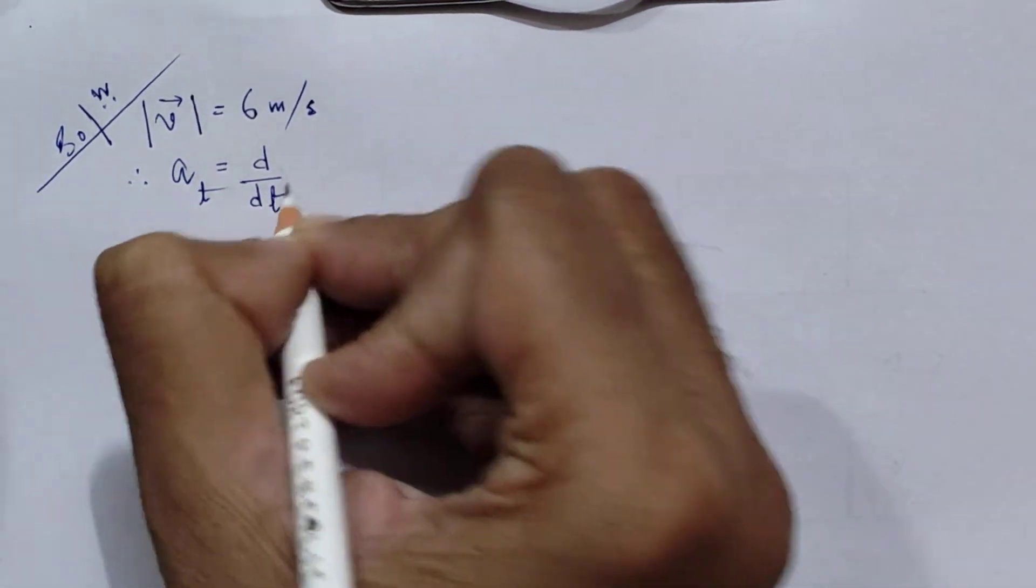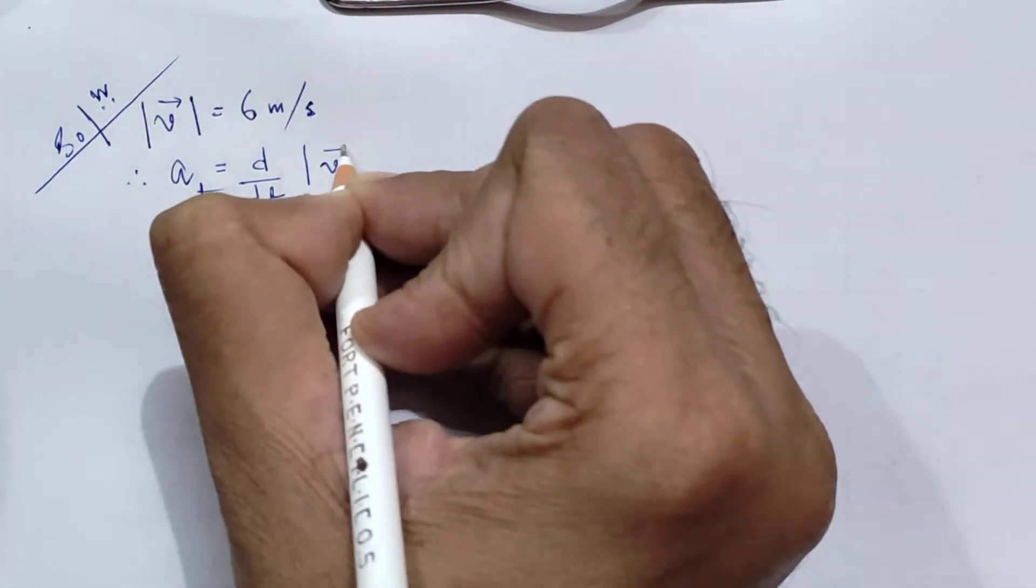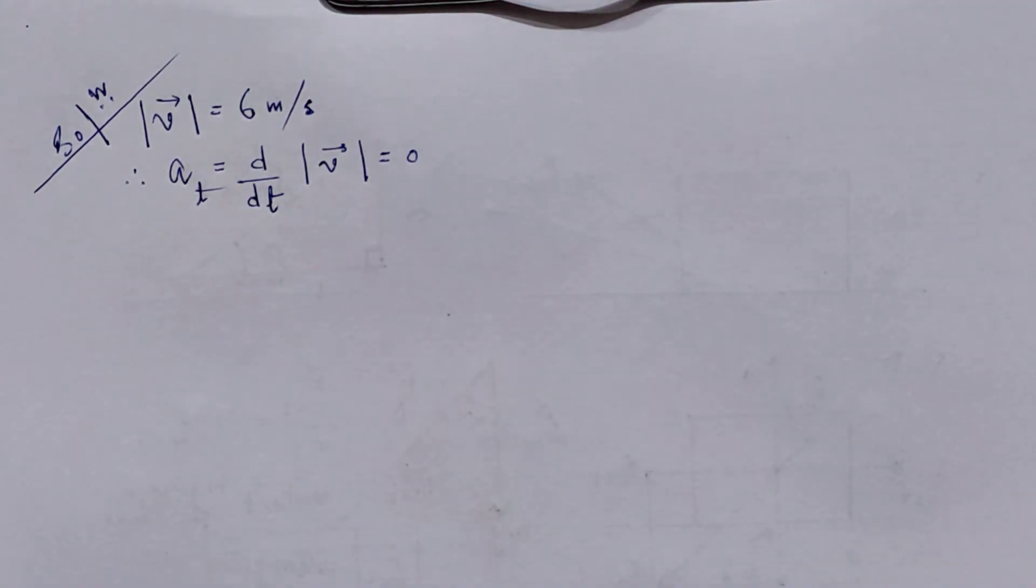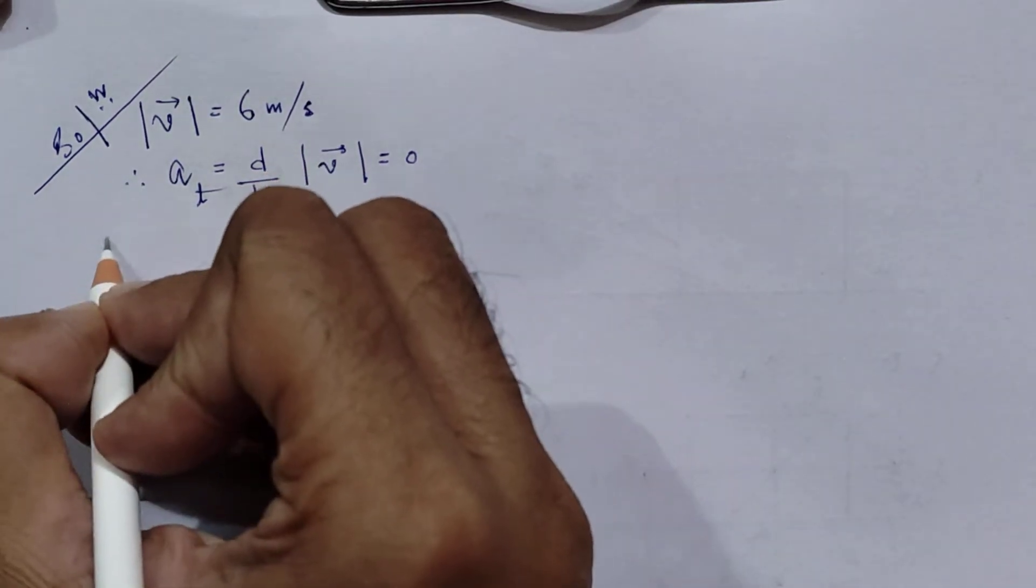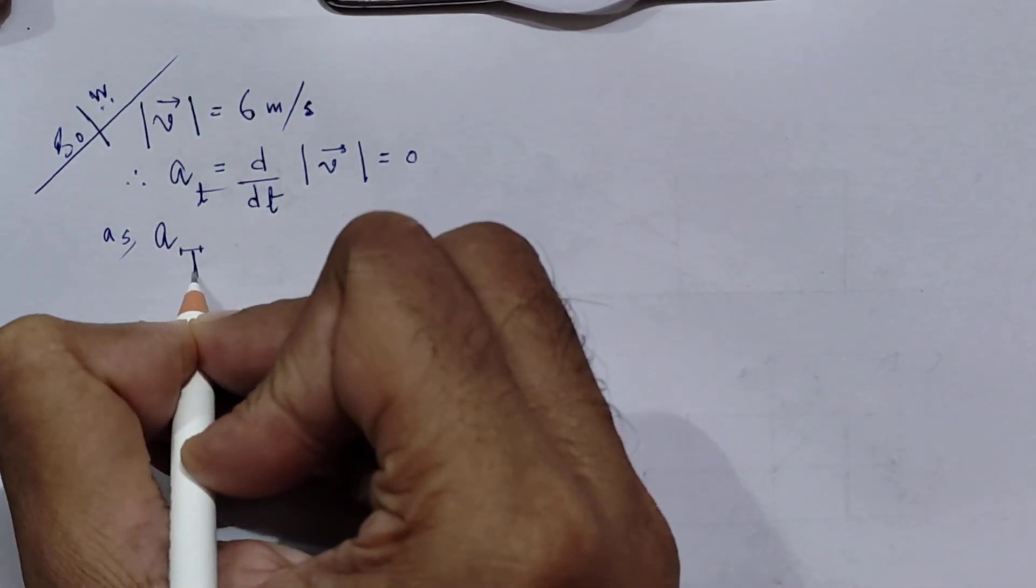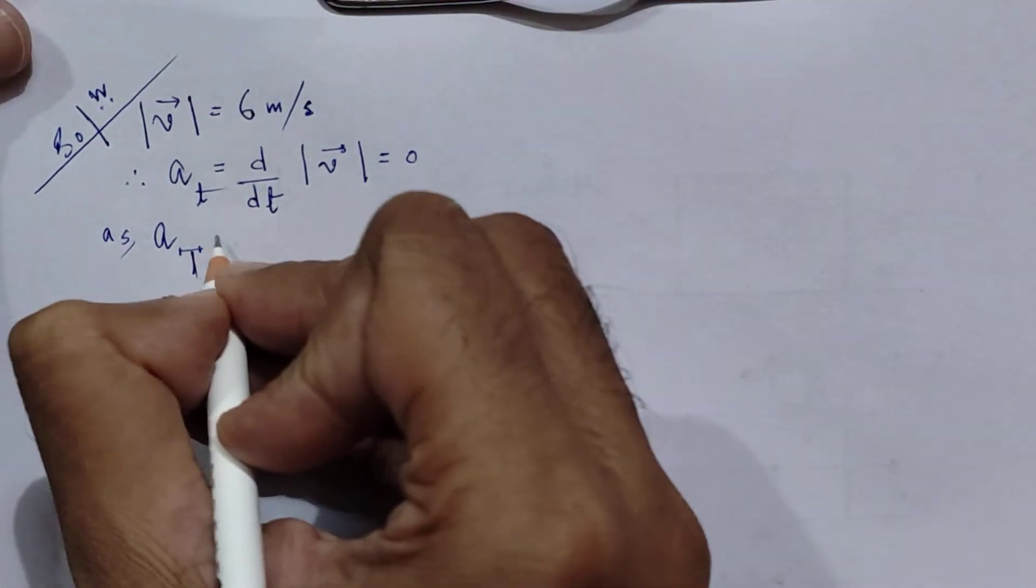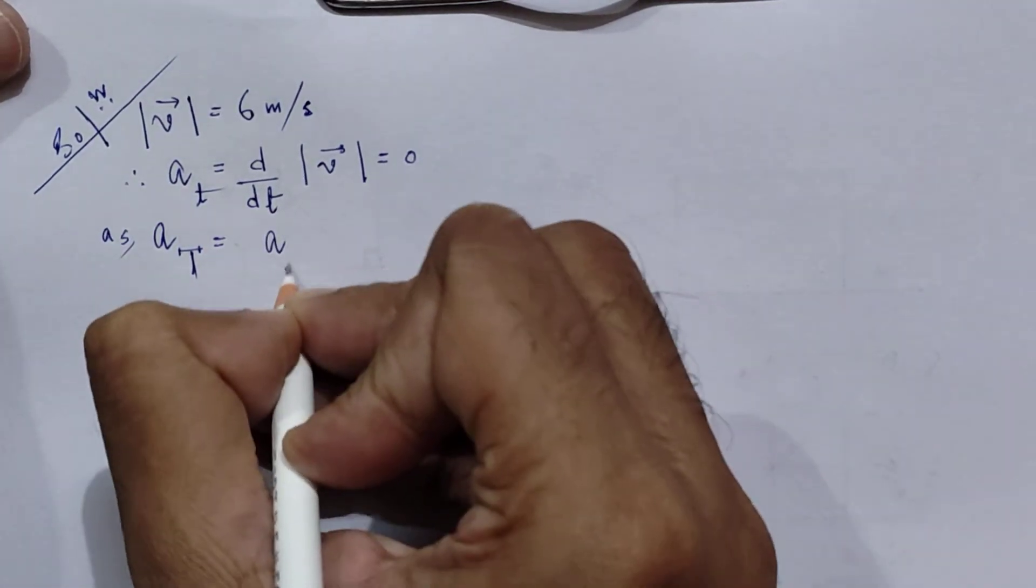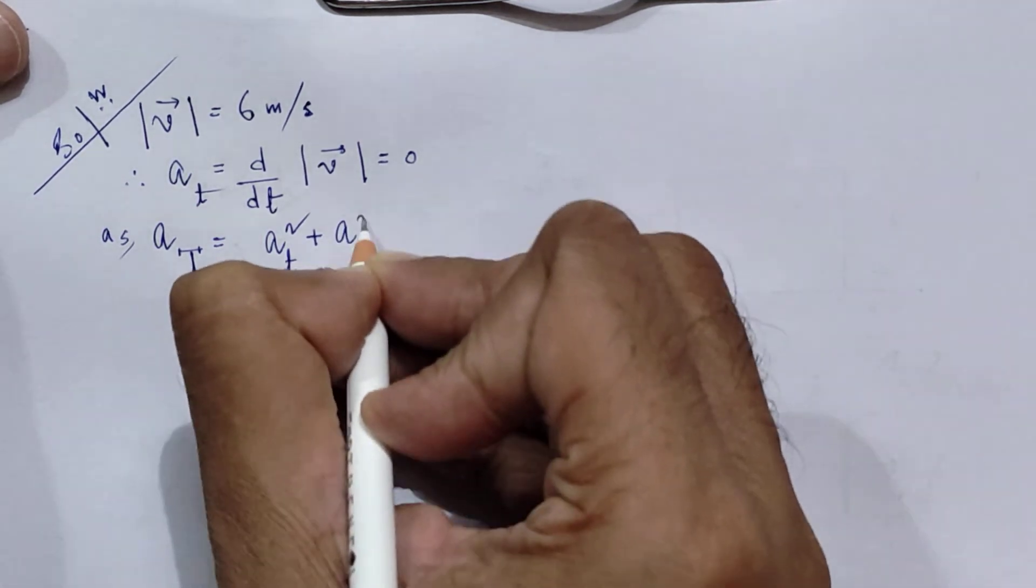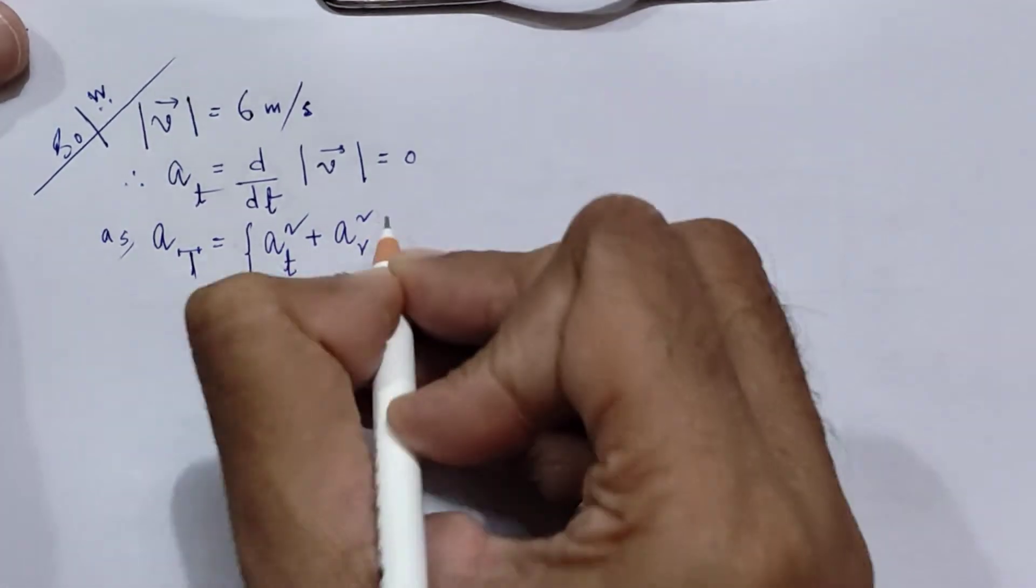So if this is constant, then therefore we can say that the tangential acceleration is d/dt of modulus of v, and that must be 0 because it is moving with a constant speed. So there is no tangential acceleration.